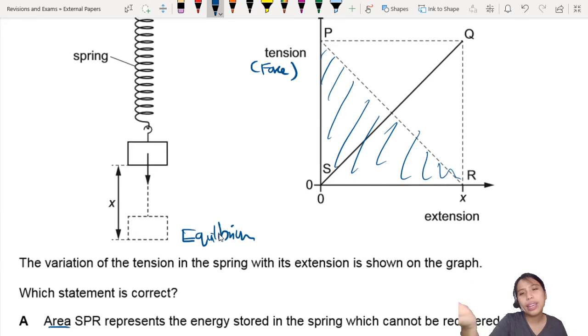Firstly, what is up with that area? Usually we say area between the graph and the extension axis, but this is neither, this is halfway. So that's one problem - SPR is a very weird area. And also cannot be recovered, how do we know whether the energy can be recovered or not? I don't know.